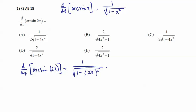times the derivative of the inside function, which in this case is simply 2. So we're going to end up with 2 goes into the numerator, square root of 1 minus 4x squared.